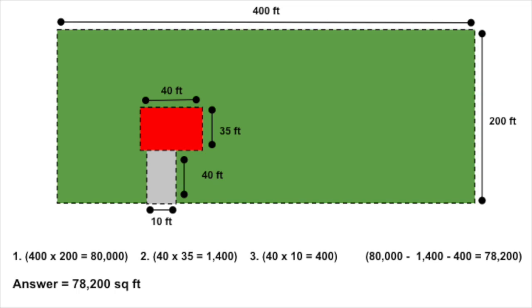How did you do? This shouldn't have been too hard, because the house and the driveway were both pretty easy rectangles. The house is 40 feet by 35 feet, which comes to 1,400 square feet. The driveway is 40 feet by 10 feet — and when you multiply those two numbers, what do you get?